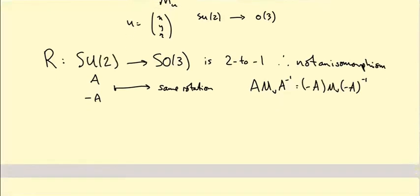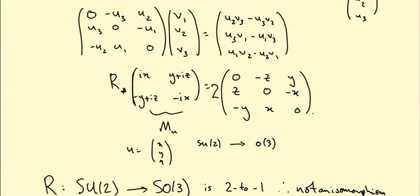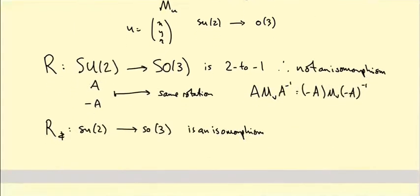However, at the level of Lie algebras, R*: su(2) → so(3) is an isomorphism. You can see it's a bijection because given the matrix on the right-hand side you can divide its entries by two to recover X, Y, Z and thus the original matrix on the left-hand side. So R* is invertible and its inverse is a Lie algebra homomorphism.